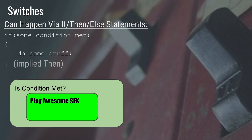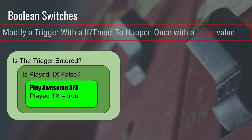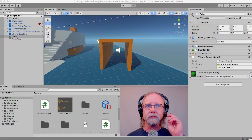We can also create additional checks to verify if other conditions are met. With a boolean, you can have one that says 'have you entered the trigger before?' — set it to false initially. When the trigger is entered via OnTriggerEnter, you check if 'playedOnce' is false, and if so, play the sound. Then you switch that boolean to true. The next time through, it checks — trigger entered? Yes. Played one time? Now true. Nothing happens. That gives us our one-time trigger.